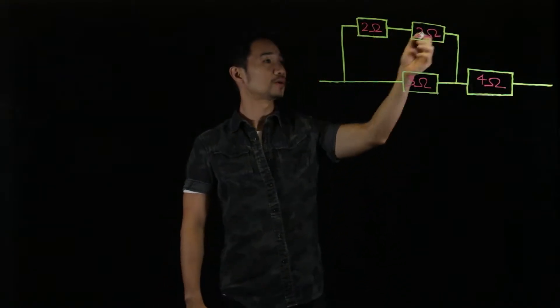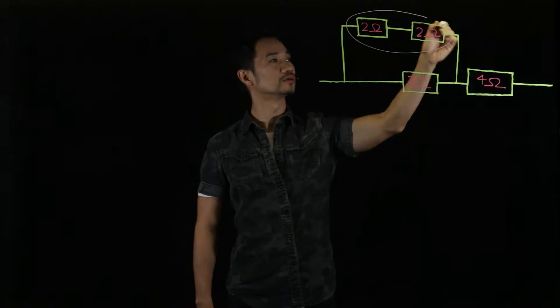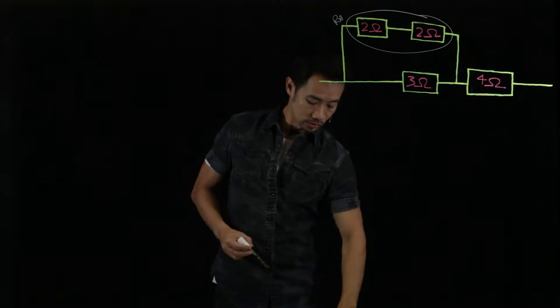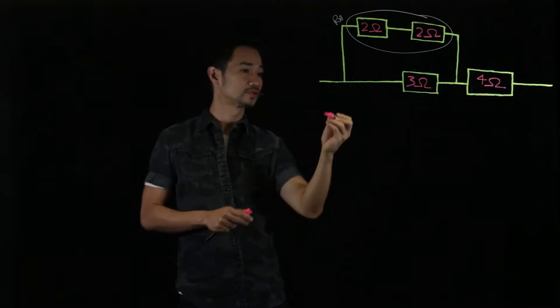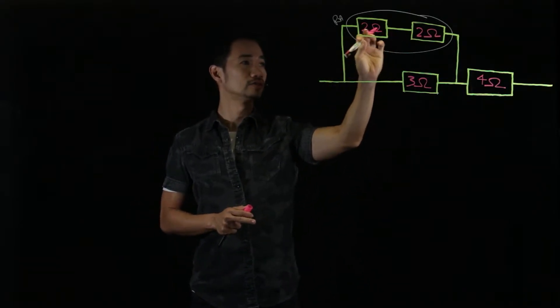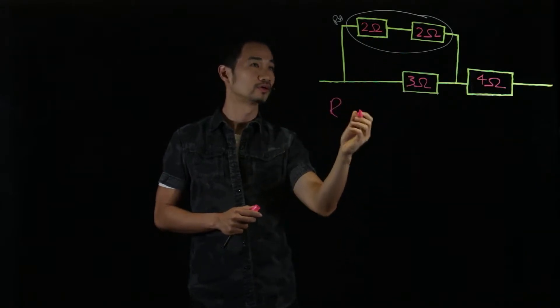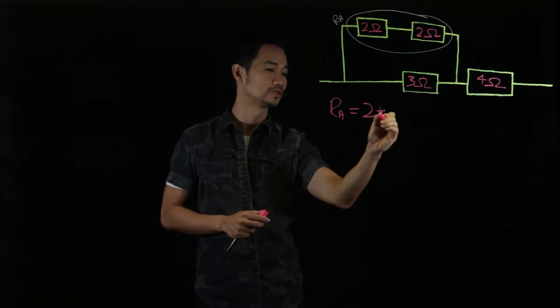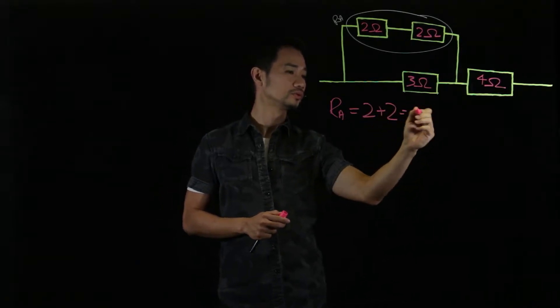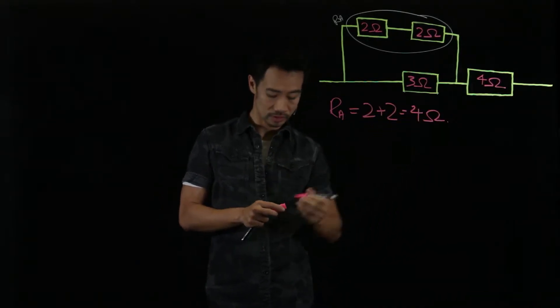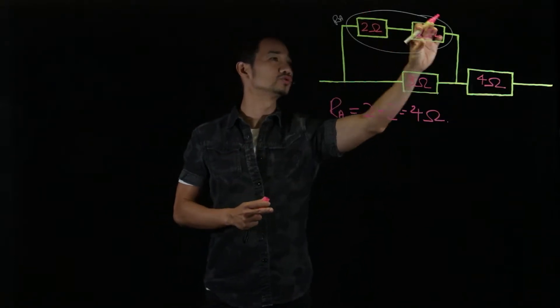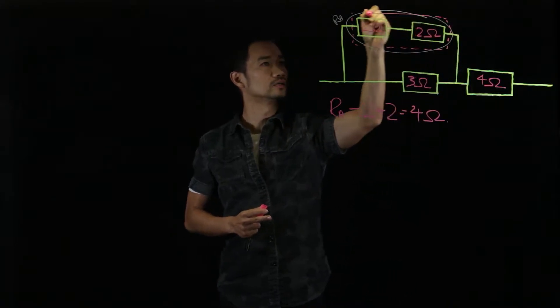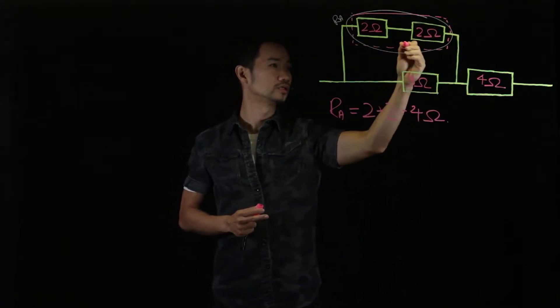So this part is quite straightforward. Let's call this Ra. So we're going to do Ra first. We learn that Ra, these are two resistors connected in series. So total resistance, you just have to add it up together. It goes to 4 ohms. So you can actually imagine these two resistors become one big resistor here. And this is actually 4 ohms.